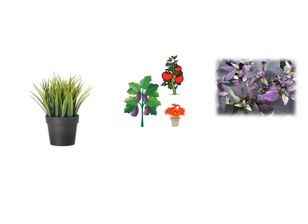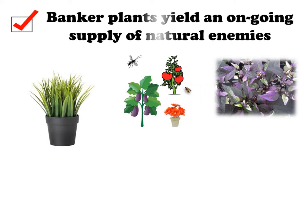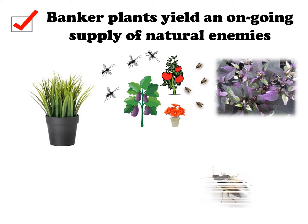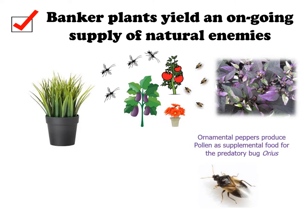Banker plants provide an ongoing supply of natural enemies that disperse into production systems. Some provide alternative food sources such as pollens and nectars. Others provide specific hosts that promote the continuous reproduction of natural enemies. An example of a pollen-producing banker plant is ornamental peppers, used for the early season establishment of the predatory bug Orius against thrips.